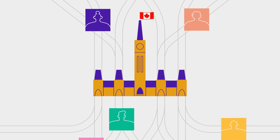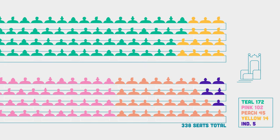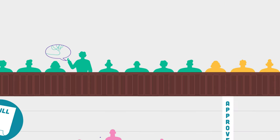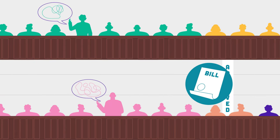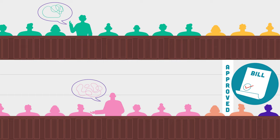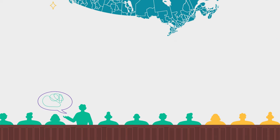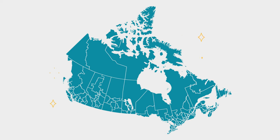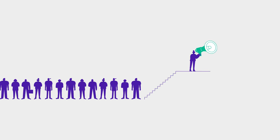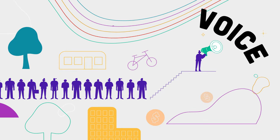They go to the House of Commons to act for and speak on behalf of the people of their riding. The political party that has the most candidates elected will usually form the government, and their leader becomes the Prime Minister. Federal elections are important because it gives us an opportunity to shape our Parliament, which makes laws that affect all of us. Your vote is your voice. Make it count.